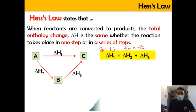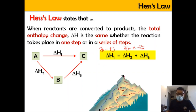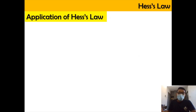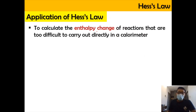You can imagine two hikers where the pathway taken by hiker 1 might be different from hiker 2, but at the end of the day the potential energy of both hikers is the same even though they took different paths. The enthalpy change between different pathways is still the same. The application of Hess Law can be used to calculate the enthalpy change of a reaction that is too difficult to carry out directly in a calorimeter.